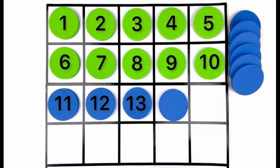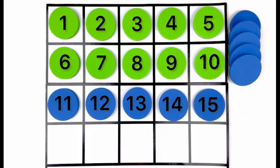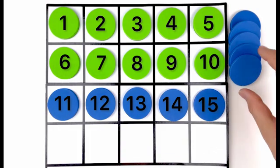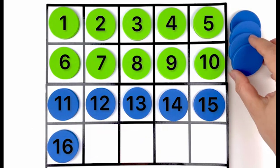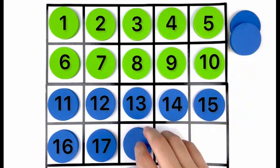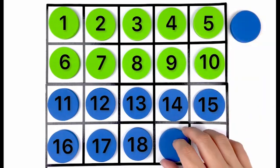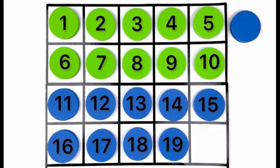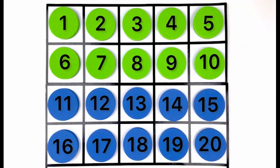Thirteen, fourteen, fifteen, sixteen, seventeen, eighteen, nineteen, twenty. Twenty circles.